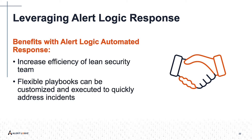One other key driver for implementation time is where your systems are. Customers with a physical data center where we're racking and stacking equipment tend to take longer. Customers on public cloud providers are on the short end of the timeline — for AWS automation, we're often getting the first blocking solution up within an hour on a call. From Gilbert: how do you manage the tension between false positives and false negatives — can this be automated or does it require human intervention?